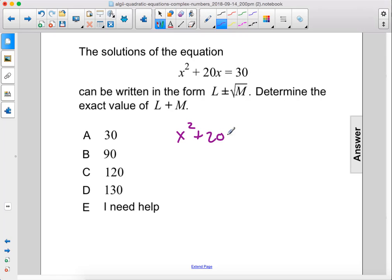Alright, let's complete the square. So we have x squared plus 20x plus, 20 divided by 2 is 10, 10 squared is 100. We're going to add 100 to the other side as well.